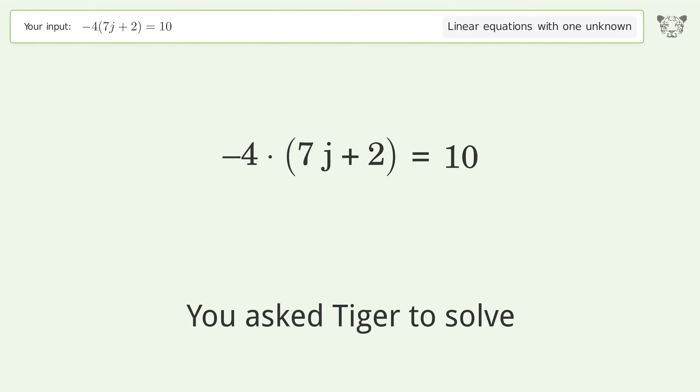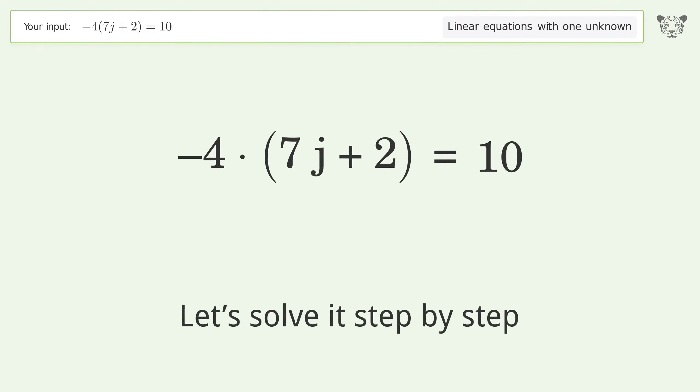You asked Tiger to solve this problem which deals with linear equations with one unknown. The final result is j equals negative 9 over 14. Let's solve it step by step.